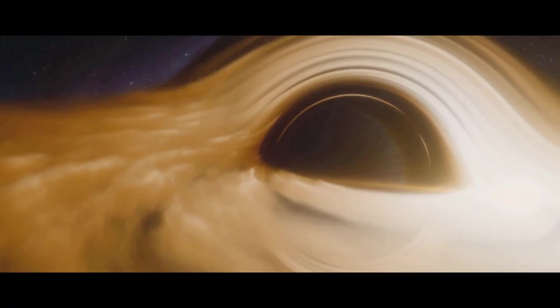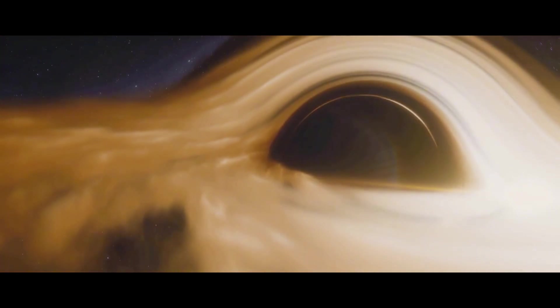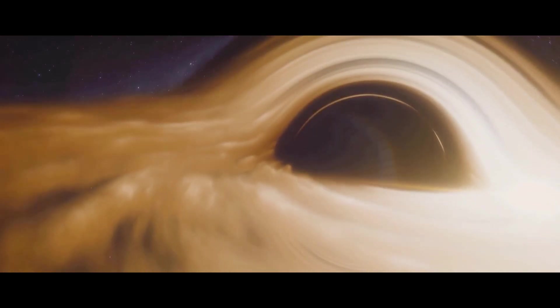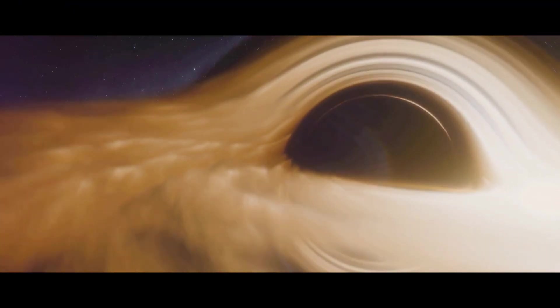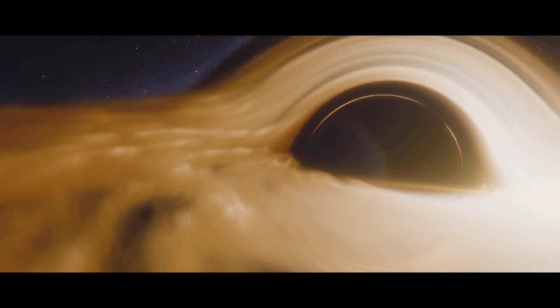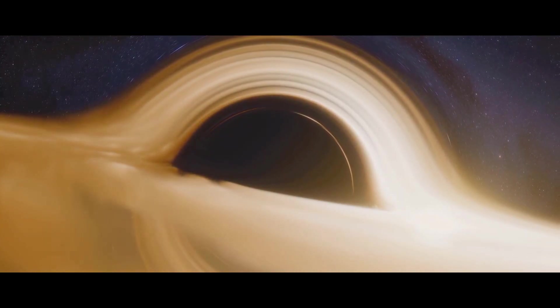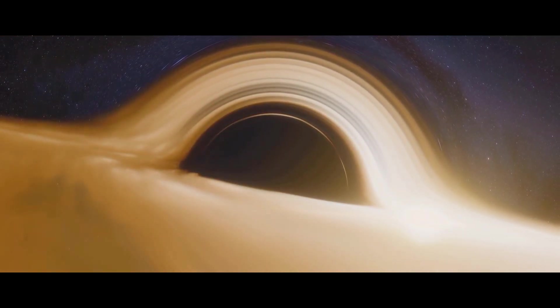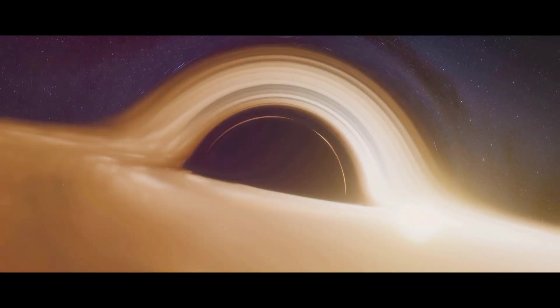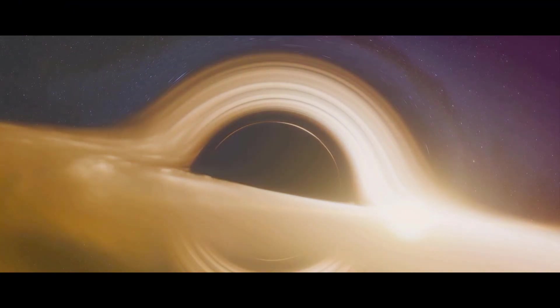But a black hole isn't just a point in space, it's a point of no return. Surrounding each black hole is an invisible boundary known as the event horizon. Cross this line and you're in the black hole's clutches forever. The pull of gravity is so strong here that it distorts space and time, a concept known as spaghettification. In simple terms, if you were to venture too close and fall into a black hole, you would be stretched out like a piece of spaghetti.